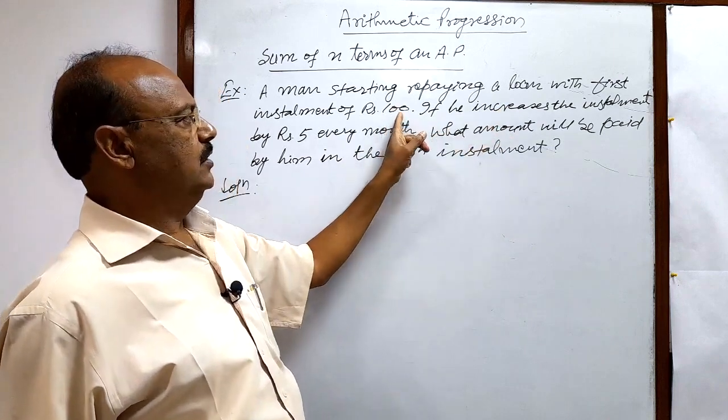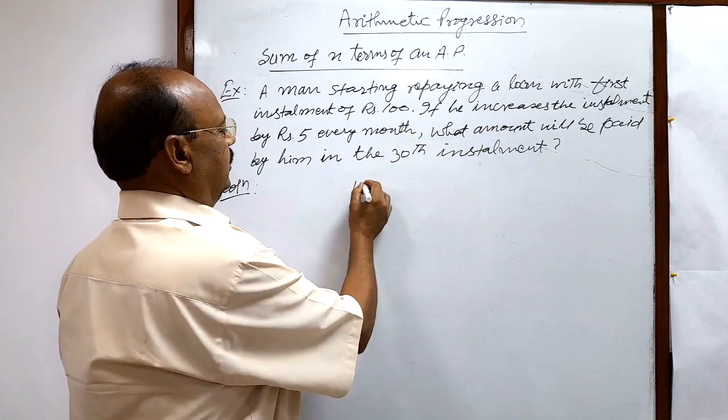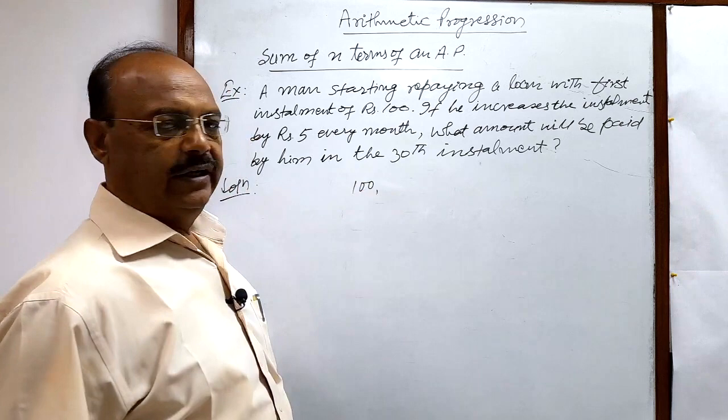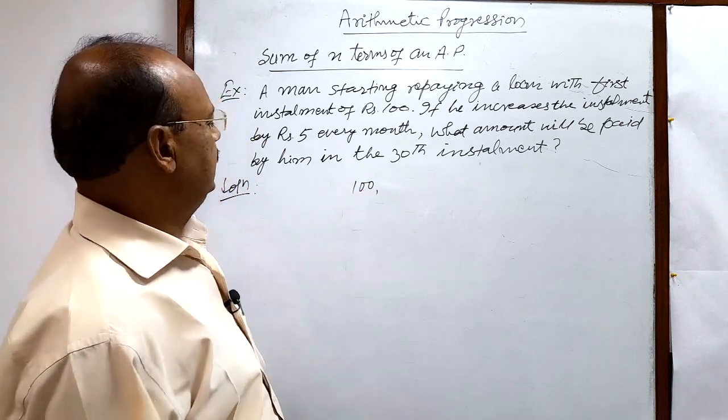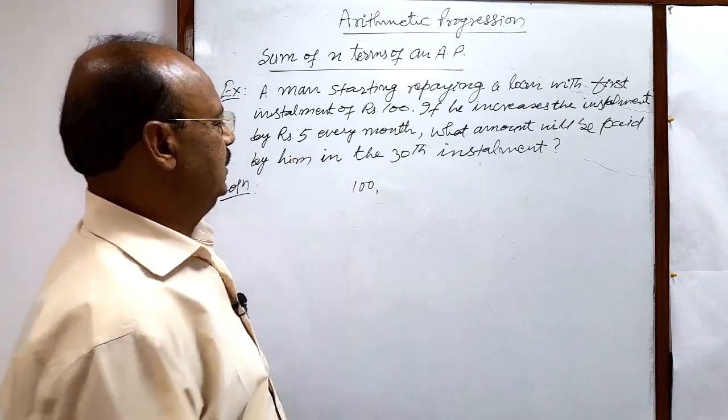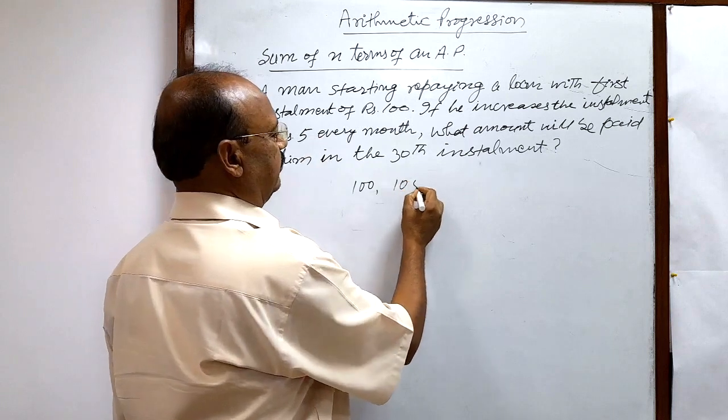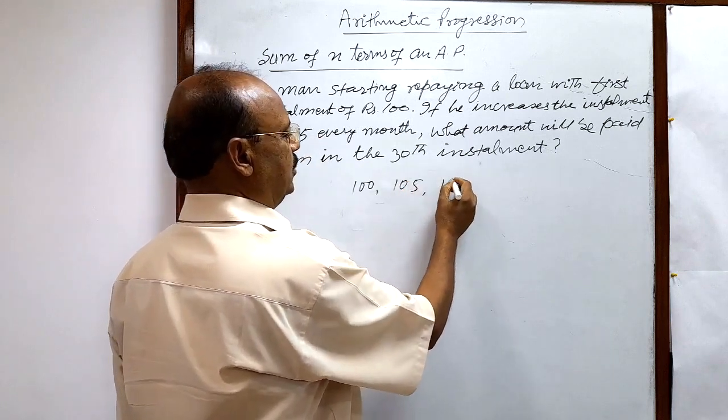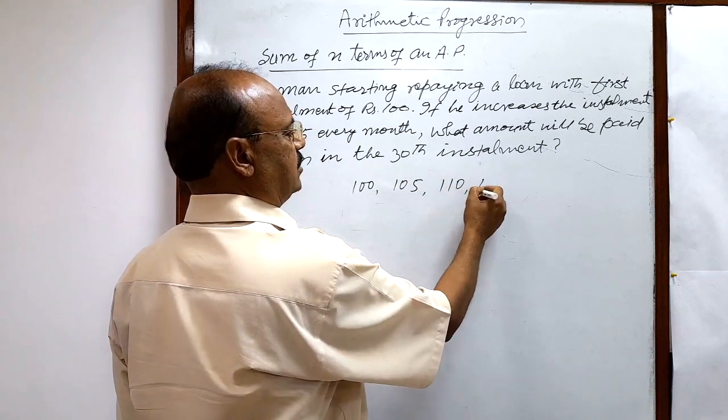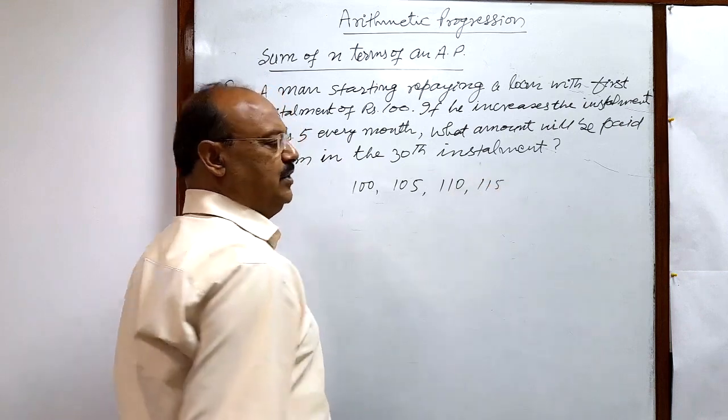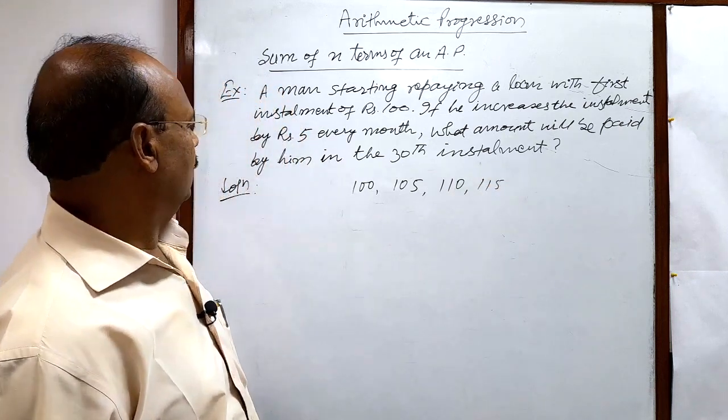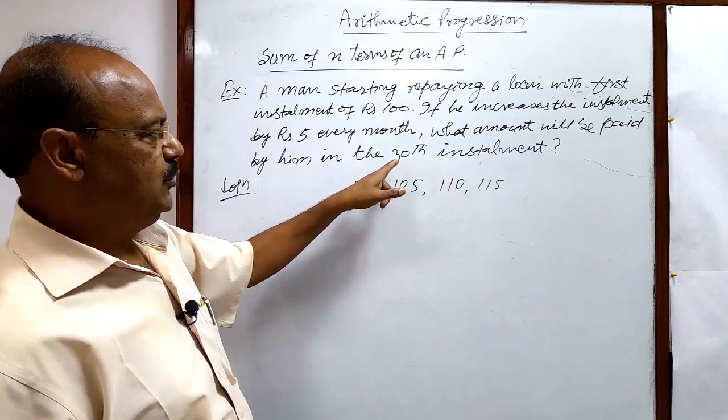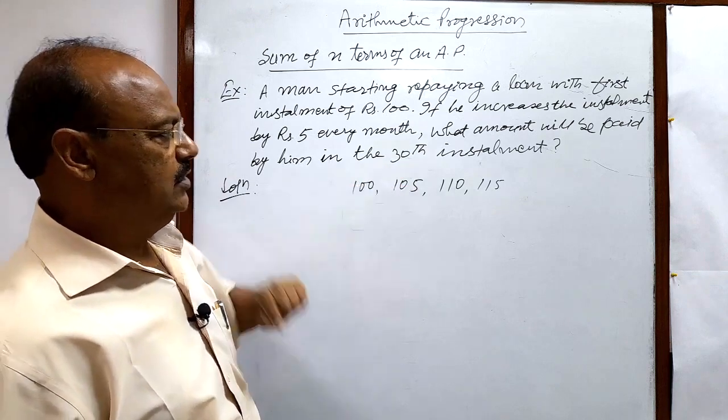His first installment is rupees 100 and the increment every month is 5, so next month he has to pay 105, the next installment is 110, then 115, and he has to pay up to the 30th installment.